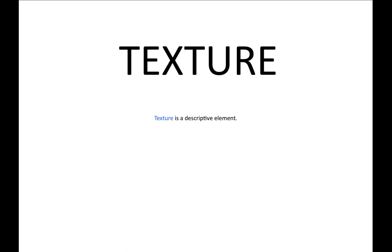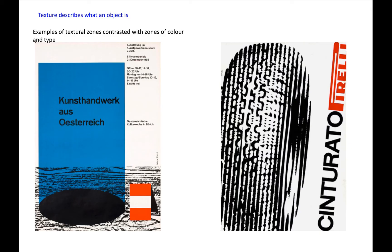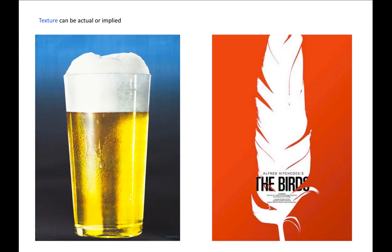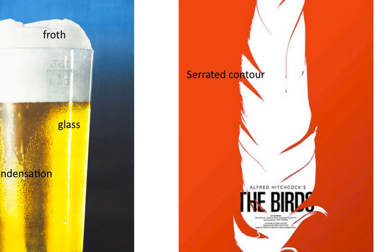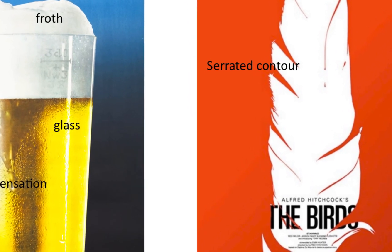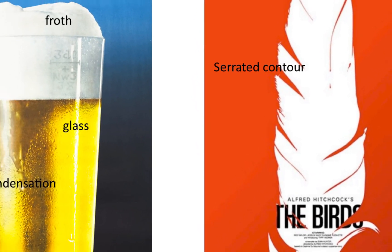Texture. Texture is a descriptive element. Texture describes what an object is. Examples of textural zones contrasted with zones of colour and type. Texture can be actual or implied. Here we have a photograph which includes the textures of froth, glass and condensation. Here we have a serrated contour representing successfully the texture of a feather.